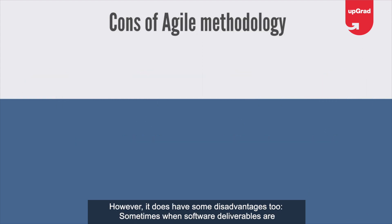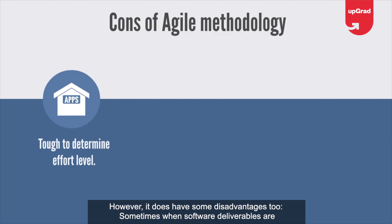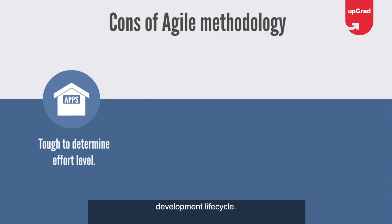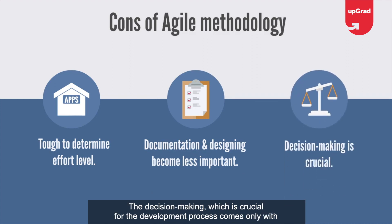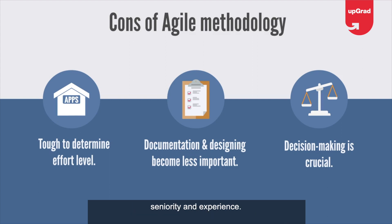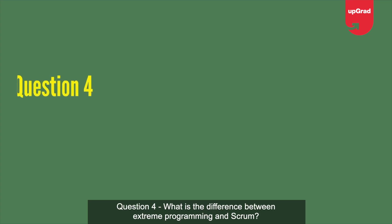However, Agile does have some disadvantages. Sometimes when software deliverables are large, it is tough to determine the effort level required at the beginning of the software development life cycle. In Agile methodology, documentation and designing take a backseat. The decision making crucial for the development process comes only with seniority and experience.